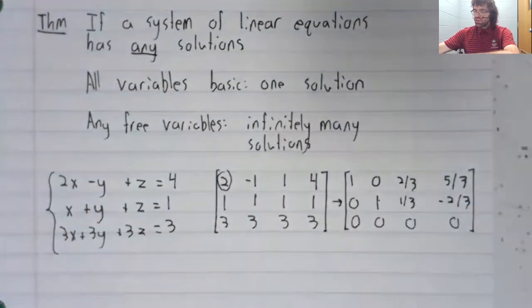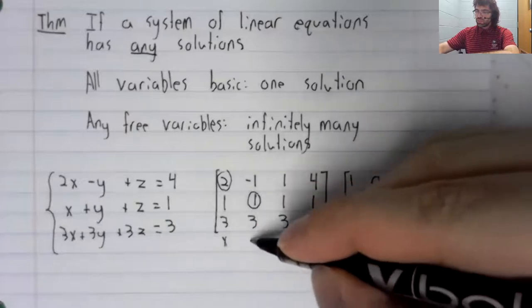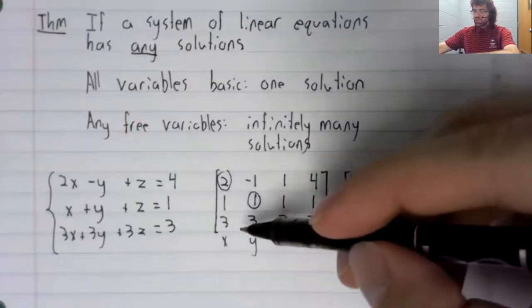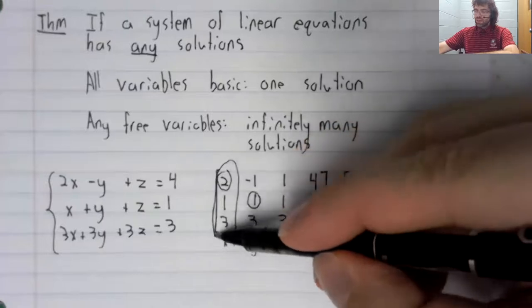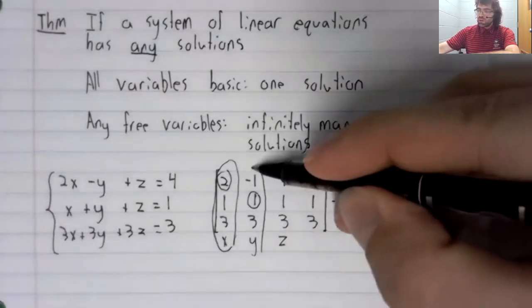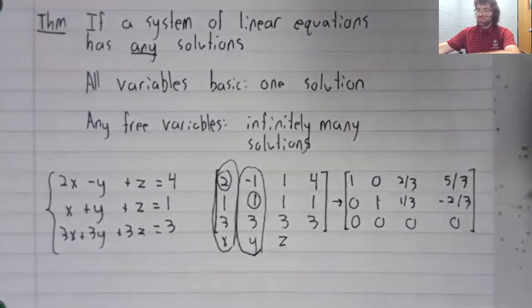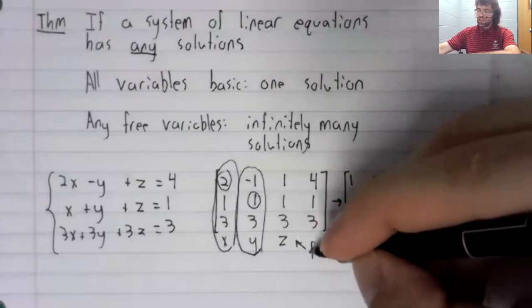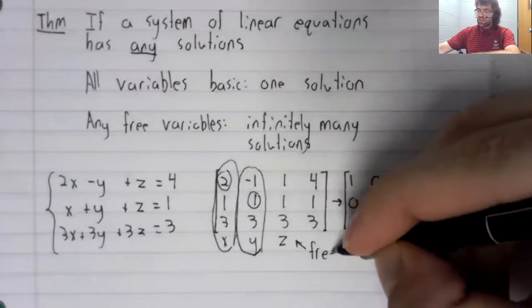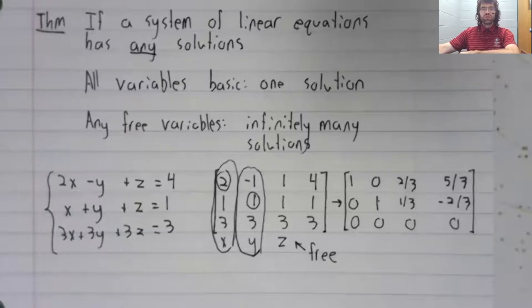And this is the pivot position and this is the other pivot position. So x corresponds to a pivot column. It's basic. Y corresponds to a pivot column. It's basic. Z is free. And this theorem says that we have infinitely many solutions.